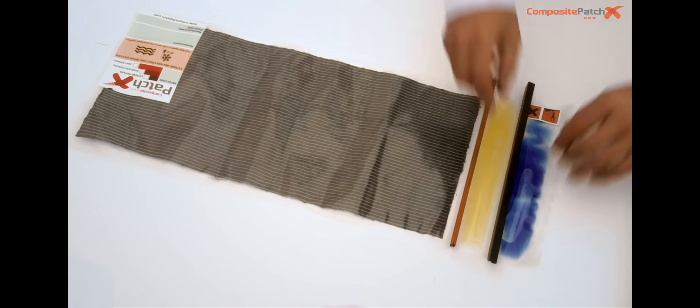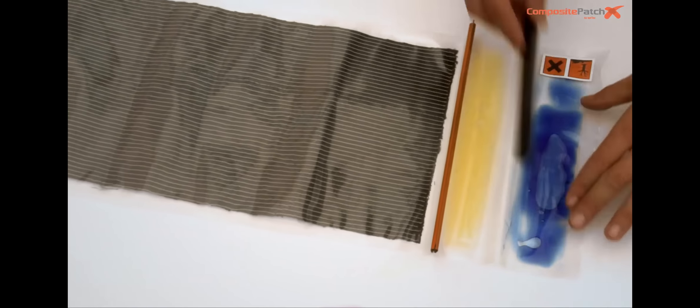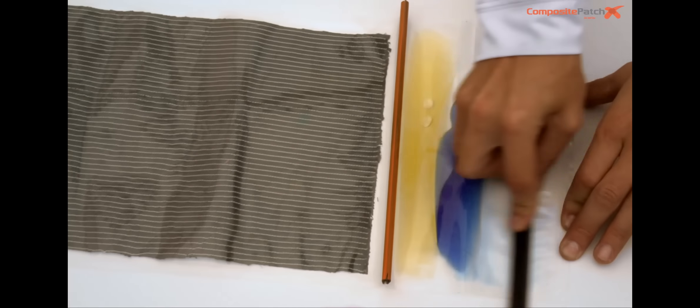Start the application of the Composite patch. The first step is to remove clip number one, black, separating the resin from the hardener.